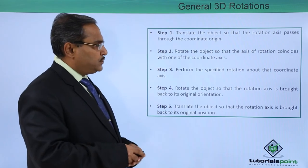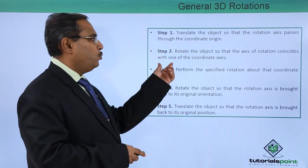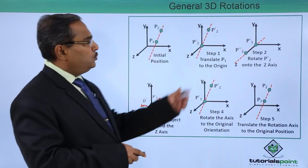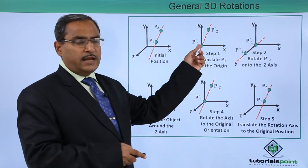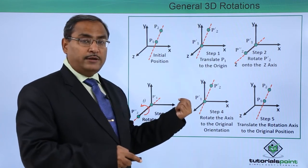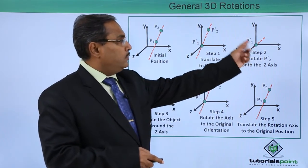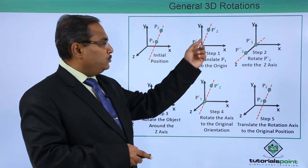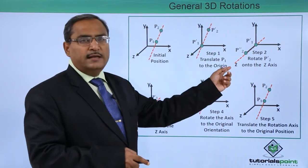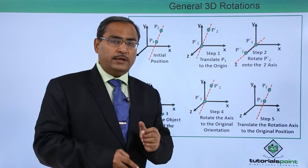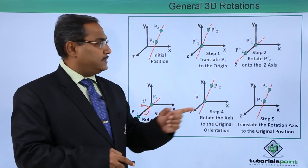Rotate the object so that the axis of rotation coincides with one of the coordinate axes. Now what we shall do? This is the reference line. This particular reference line or this line against which we are supposed to do the rotation, here we are giving a rotation to that so that it matches with the z axis. It is not mandatory that it should be matching with the z axis only. It can match with any one of the axis.